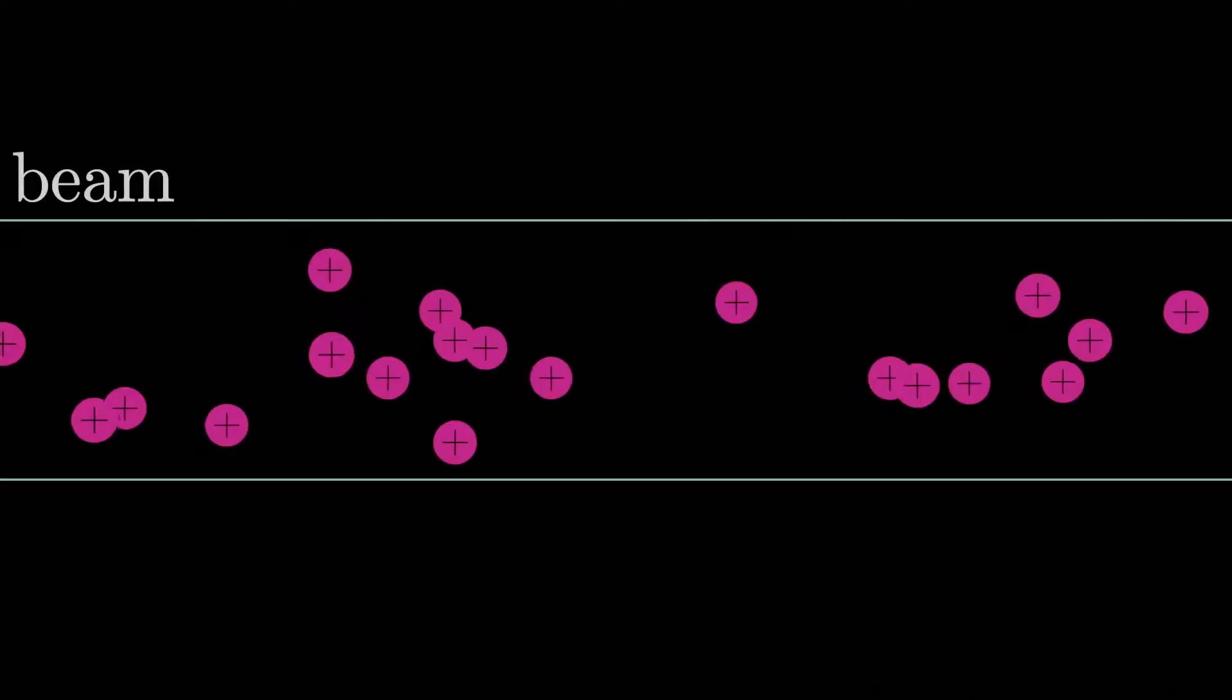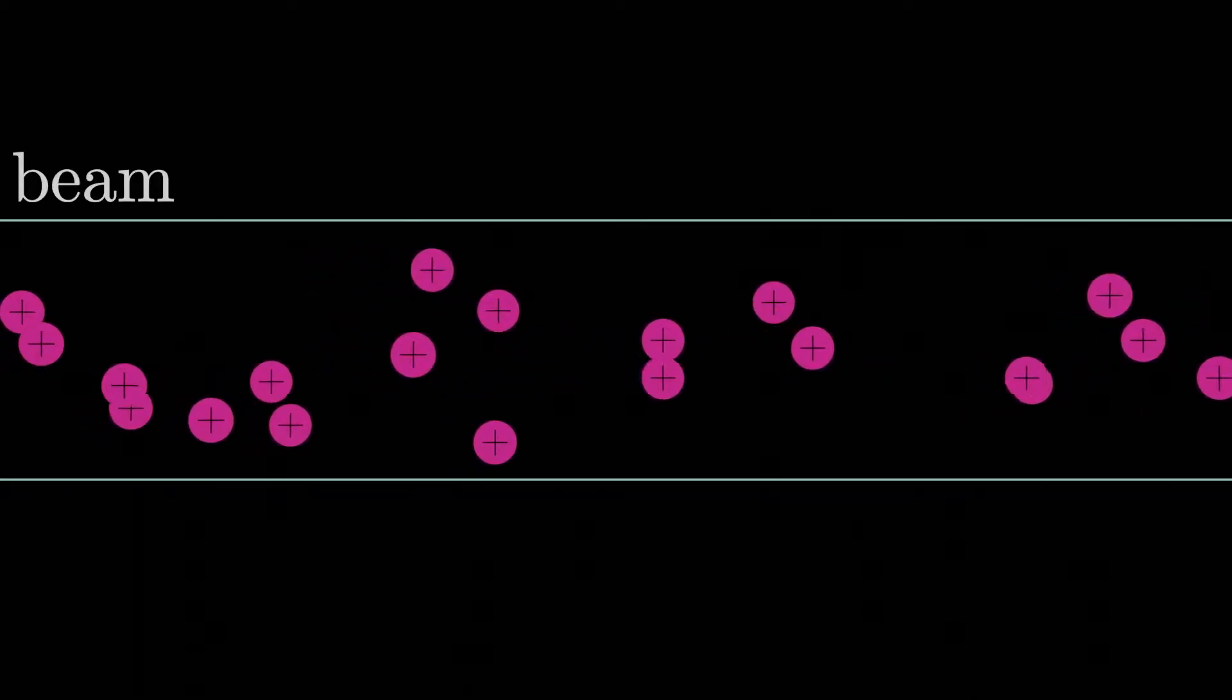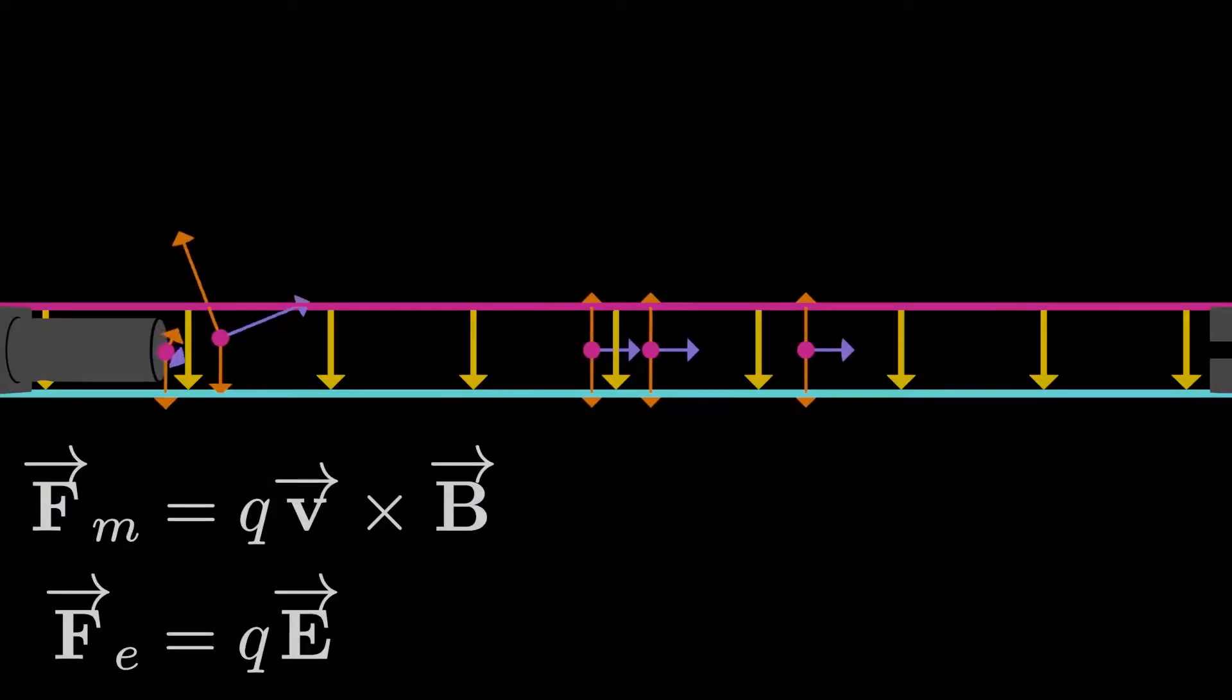So we've gotten to the point where we can take a beam of charged particles all moving at different speeds and select out particles that are going at a specific speed. Now what? What can we do with that?